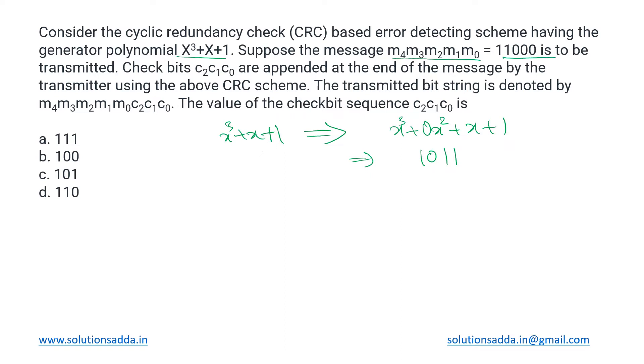The check bits will be three because our generator has four bits, so we will be appending three check bits to it and then transmitting it over the link.